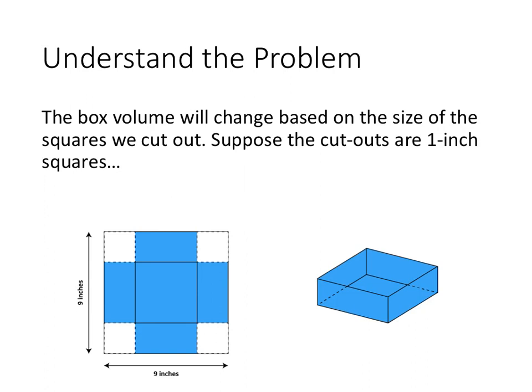So to better understand this problem, let's just try a value to see what happens. So what if the squares that we cut out are 1 inch by 1 inch? Then our picture looks a little something like this. Notice that when we fold up the sides, the sides become the height of the box. So that 1 inch square that we cut out becomes the height of our box.